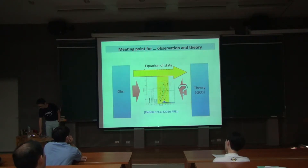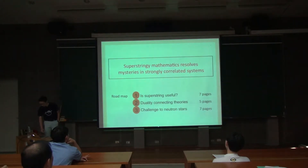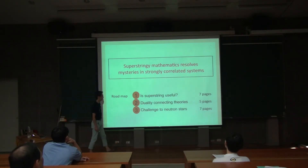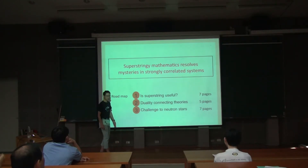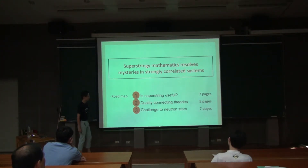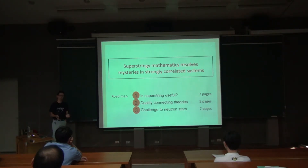This is the end of my introduction. From now on I'll explain a little bit of superstring theory. Section one is: is superstring useful? — seven slides. If I convince you that superstring theory is useful, then I can do section two, the duality notion which connects theories, and then I'll summarize the challenge. The summary of my talk is that superstring mathematics can resolve strongly correlated systems — which include QCD and strongly correlated electron systems responsible for high-TC superconductivity. For those very difficult theories, superstring theory makes them tractable.